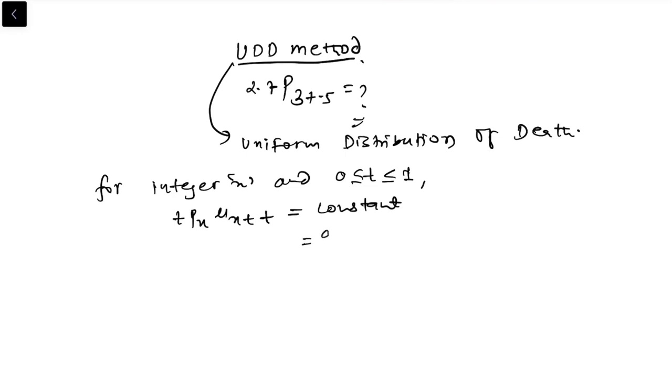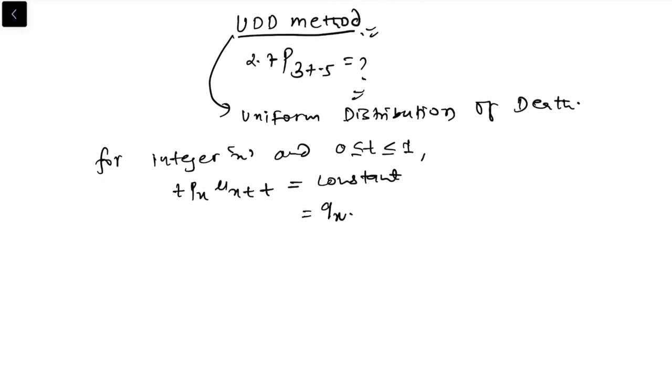This is equal to qx. So this is the assumption in UDD method. Also, UDD assumes that mu x increases over the year of age.